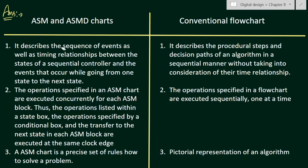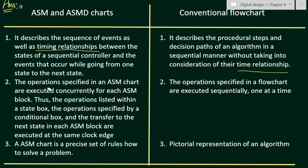The first difference is that the ASM chart describes the sequence of events as well as the timing relationship between the states of a sequential controller and the events that occur while going from one state to the next state. In the conventional flowchart, it describes procedural steps and decision paths of an algorithm in a sequential manner without taking into consideration the timing relationship. So the first difference is timing relationship: ASM chart has it, conventional flowchart does not.